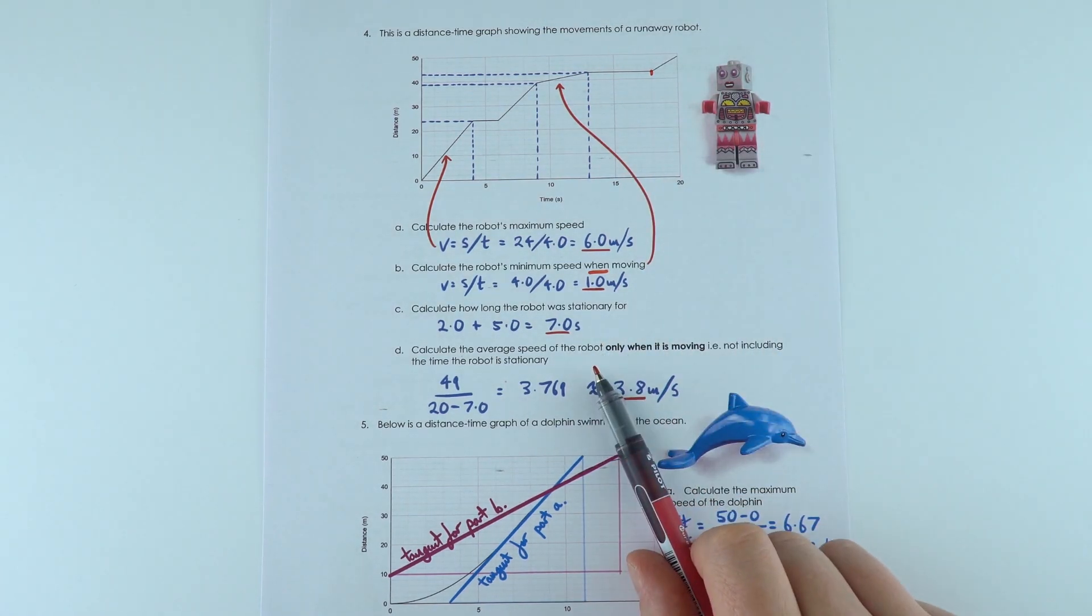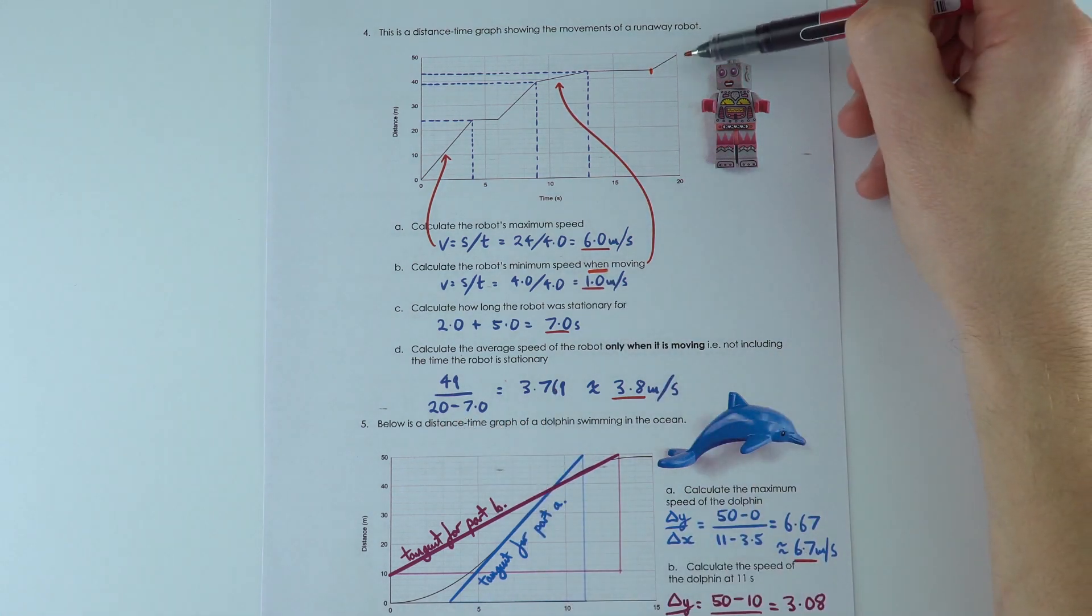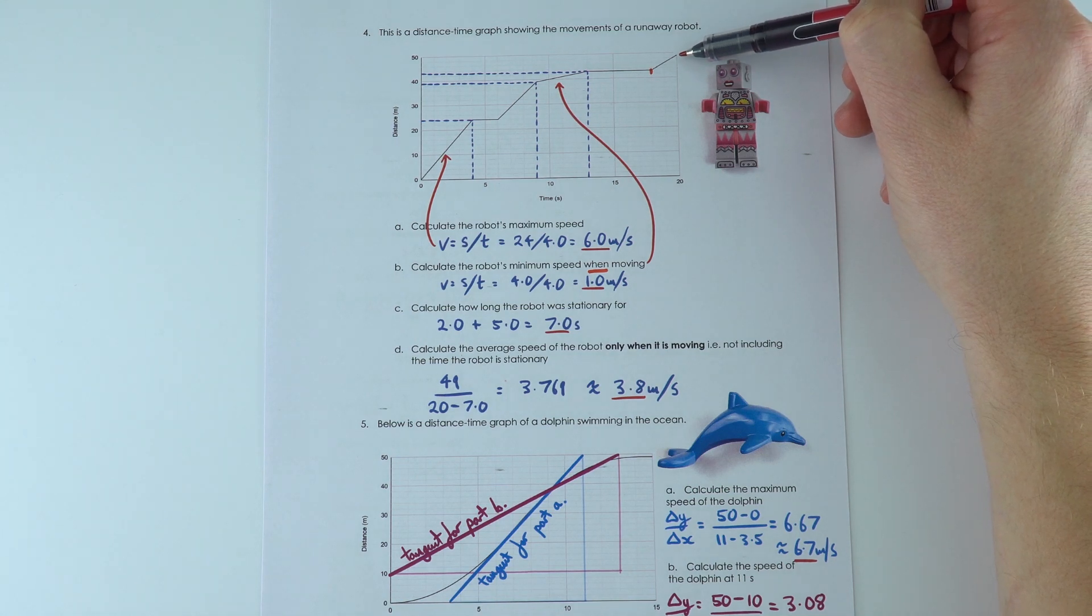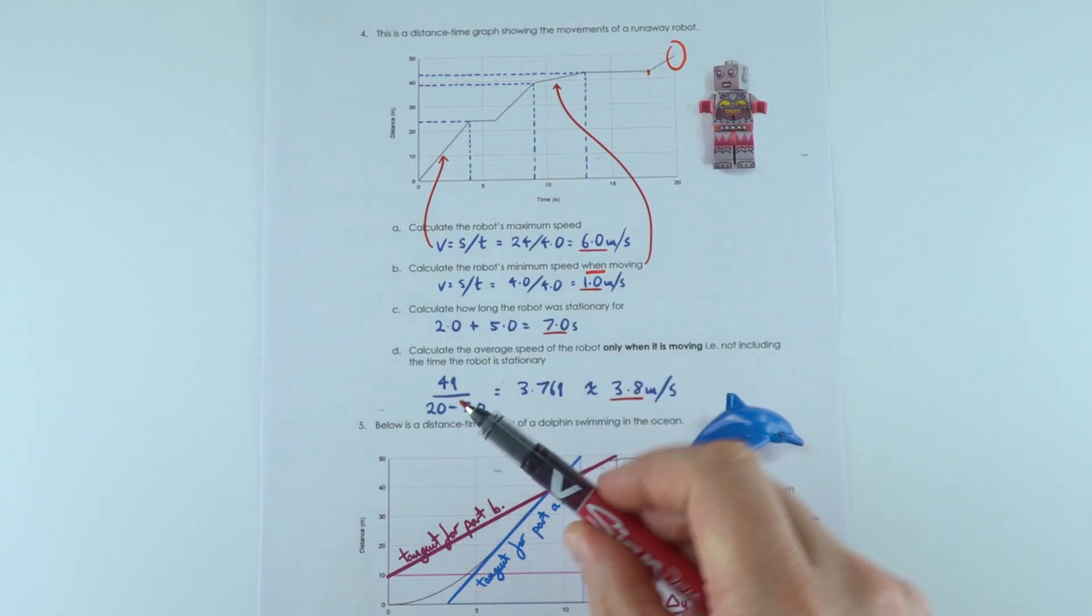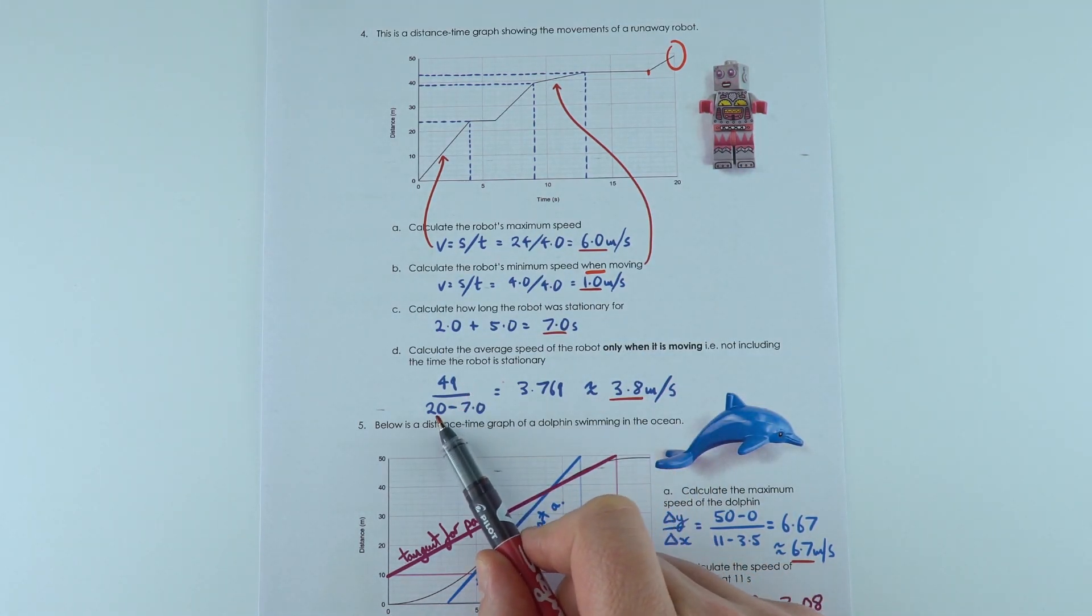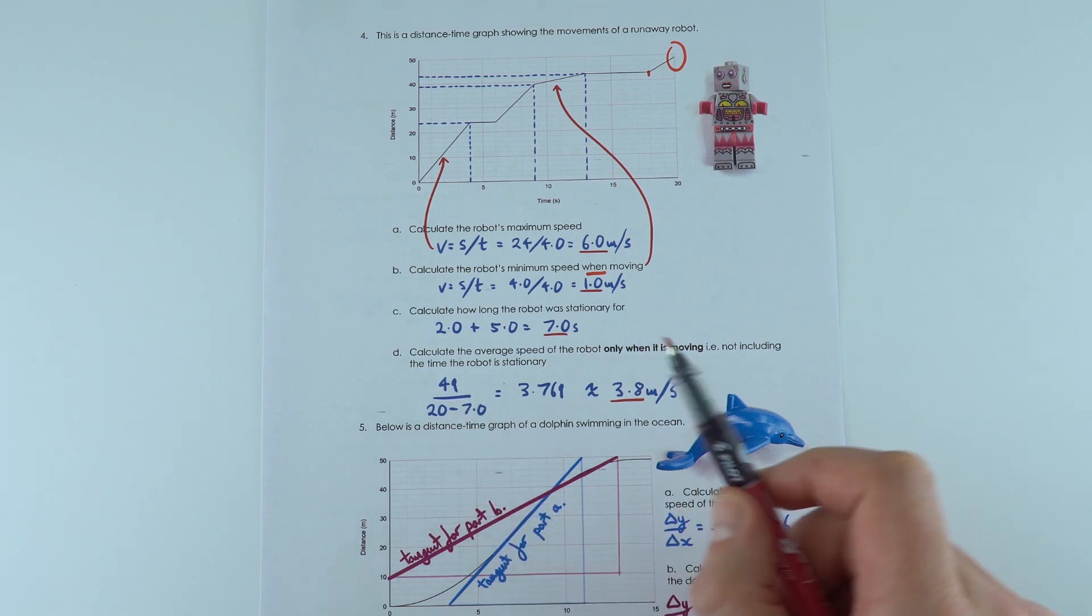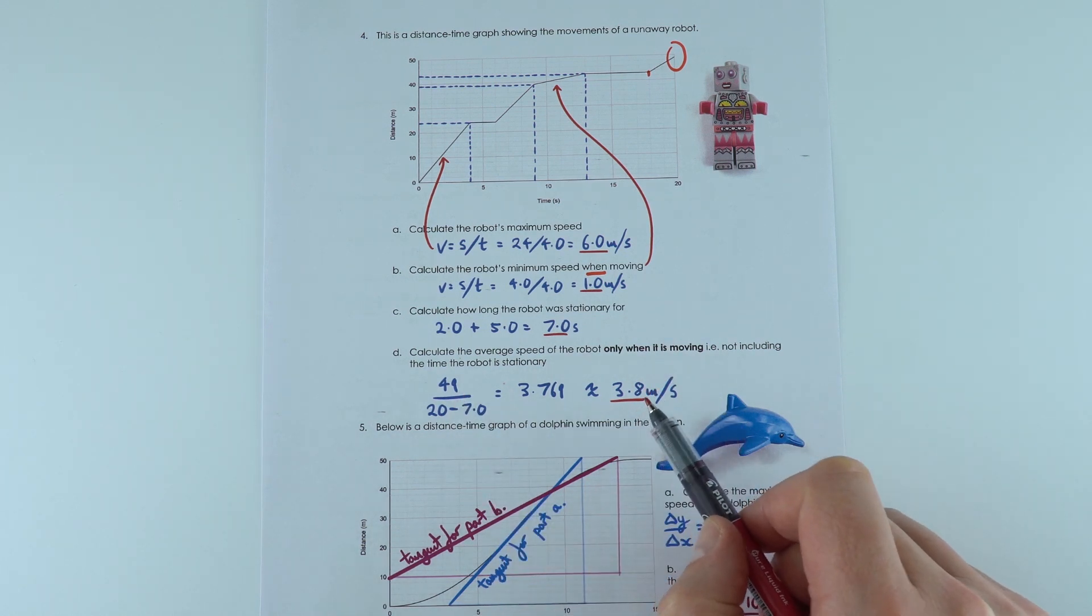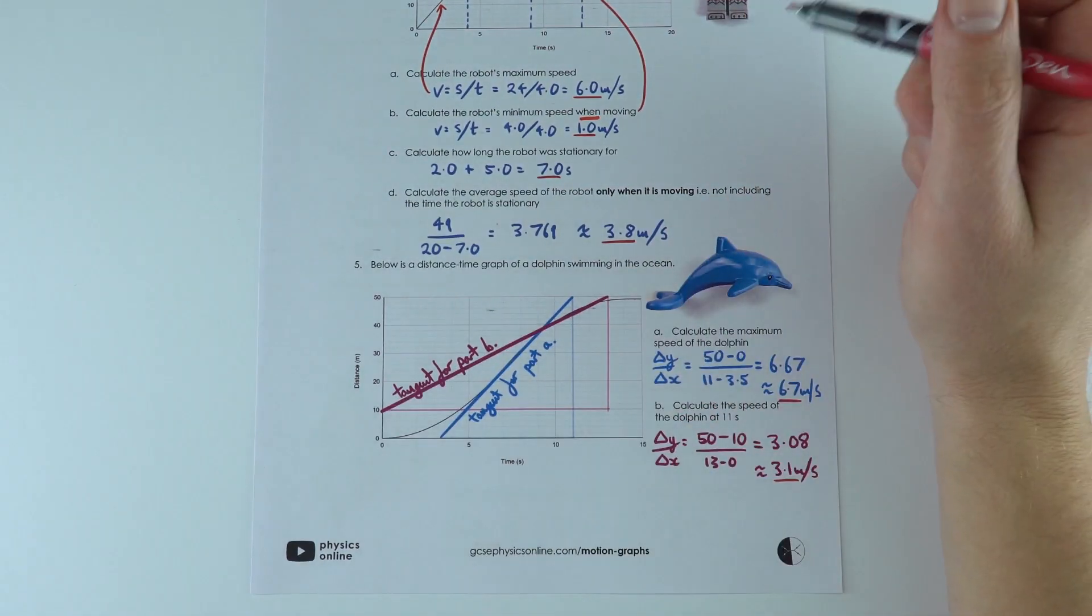The average speed of the robot when it was moving, so not including the time it was stationary—well, it went a total distance of 49 meters. You might think that's maybe 48 depending which value you took; I thought it was about 49. So the total distance was 49, and in 20 seconds they were stationary for 7 seconds, so it's 49 divided by 13, which is about 3.8 meters per second. Question 5, this is quite an advanced skill, maybe for higher tier students.